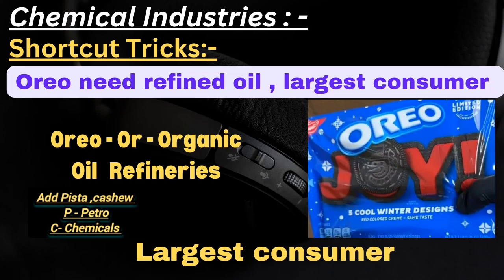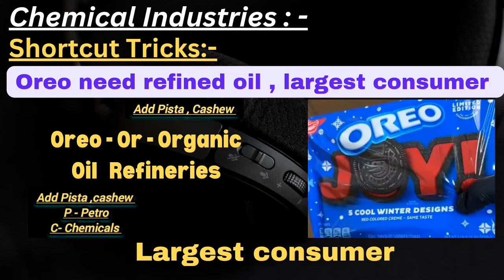The next shortcut: imagine you are going to prepare an Oreo biscuit. To prepare it you need refined oil, pista, and cashews. OR in Oreo represents organic, refined oil represents refineries, and PC - pista and cashews - represents petrochemicals. So organic chemicals are located near oil refineries and petrochemical plants.